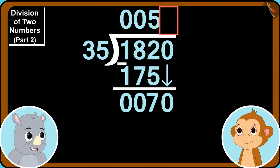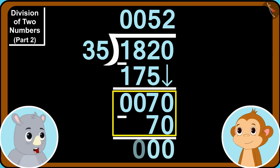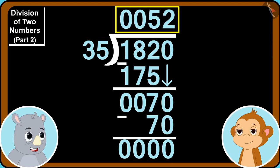The cost of one colour pencil box is 52 rupees. So, we will now write 2 here and write 70 at the bottom. 70 minus 70 is 0. We got our answer Babban.